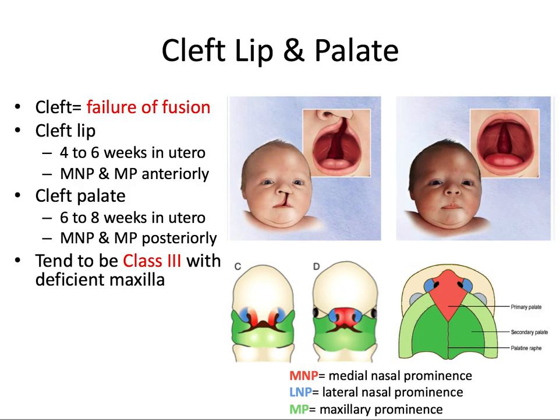Due to the location of these prominences, the cleft lip usually occurs off midline and is usually, but not always, unilateral. It can be bilateral, leaving an isolated island of tissue at the center where the medial nasal prominence has been separated from the maxillary prominence on either side — proper fusion on one side, improper fusion on the other.